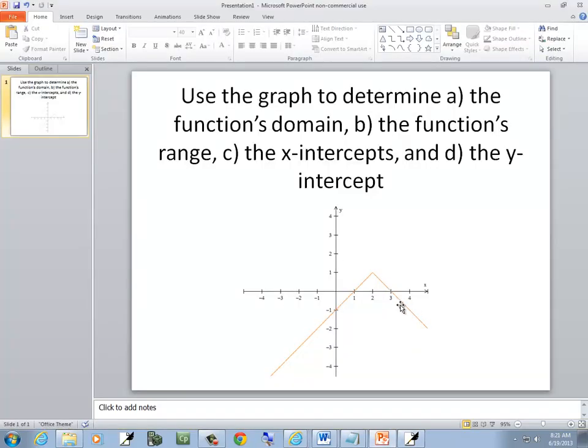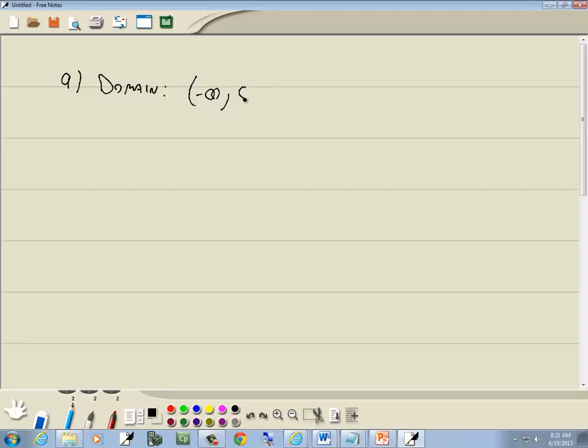Now in this one, as it's going to the right, or as it's going down, it's going to the right. So as it keeps going down, it will keep going to the right to positive infinity. So our domain is negative infinity, positive infinity.